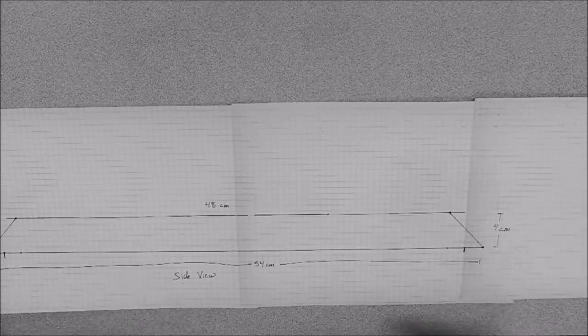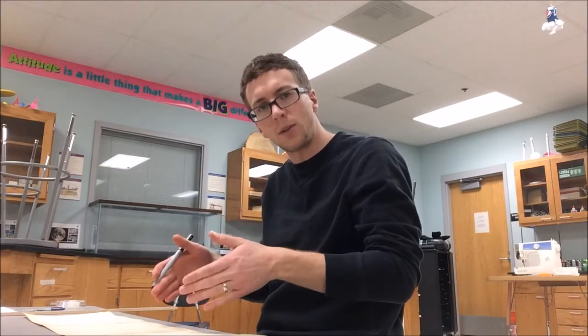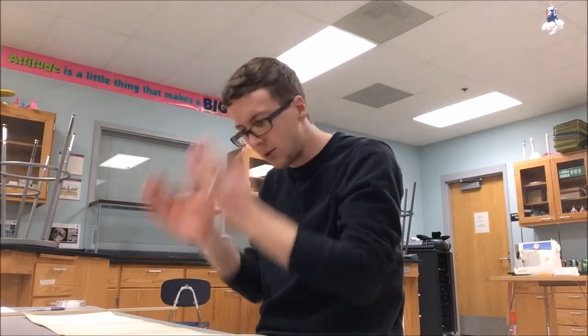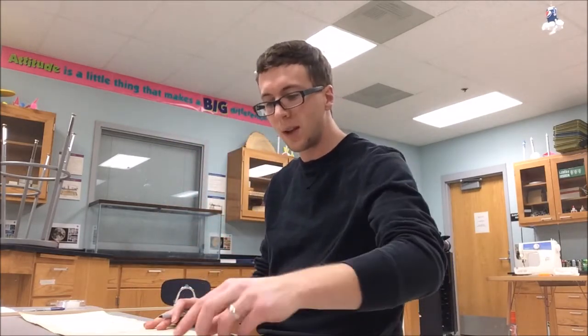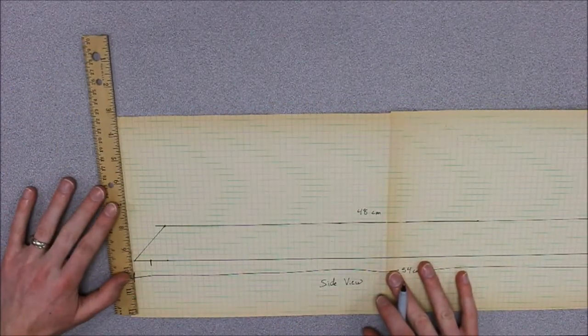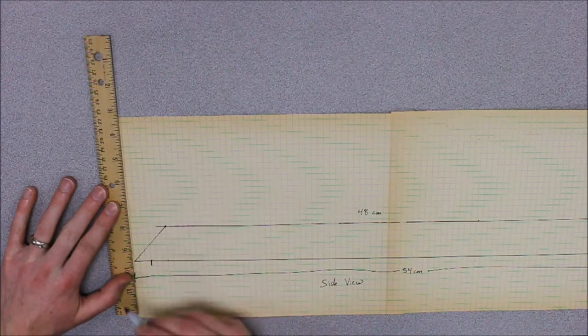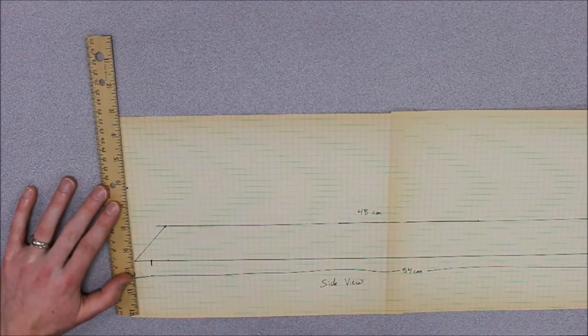So this is my side view, but I also want to do a top view and a front view. So this top view, that's if I were looking straight down at the bridge, like a bird's eye view straight down. So what I could really do, and it's very simple, I'm just gonna take the ruler, follow that line up here, let's just say I'll start it here.